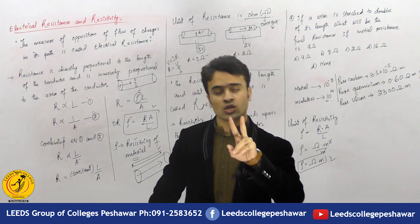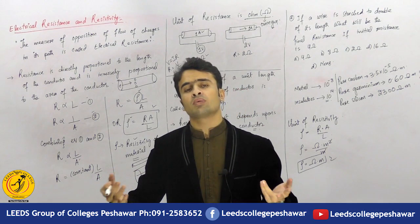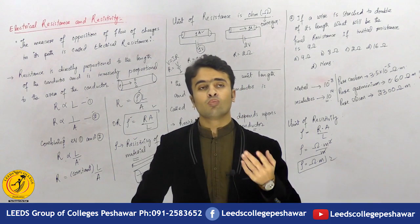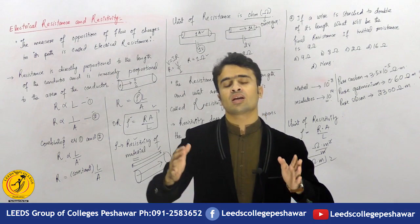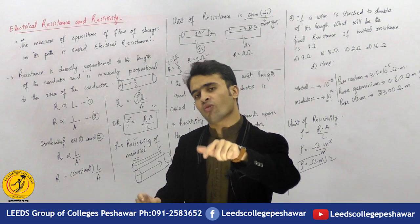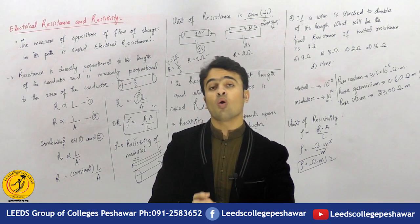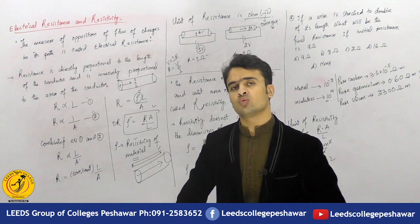Two different materials can have the same resistance. For example, for copper material, the resistance depends on its dimensions — a 1-meter piece has a certain resistance, a 2-meter piece has more, and a 3-meter piece has even more. But resistivity is fixed for copper regardless of dimensions. Resistivity does not depend on length, does not depend on area — it only changes when the material changes. If we replace copper with aluminum, resistivity changes. Resistivity equals R times A divided by L.